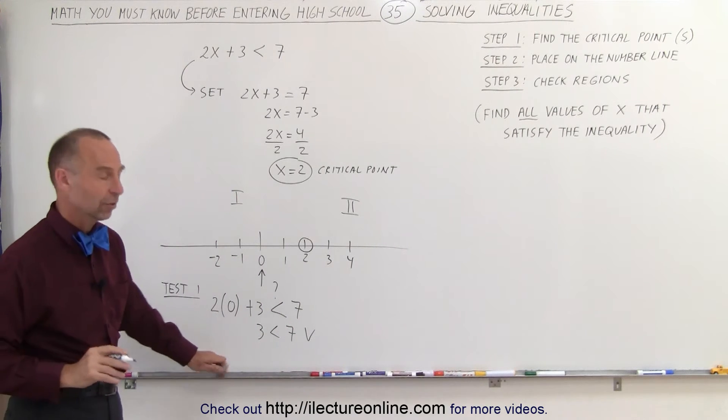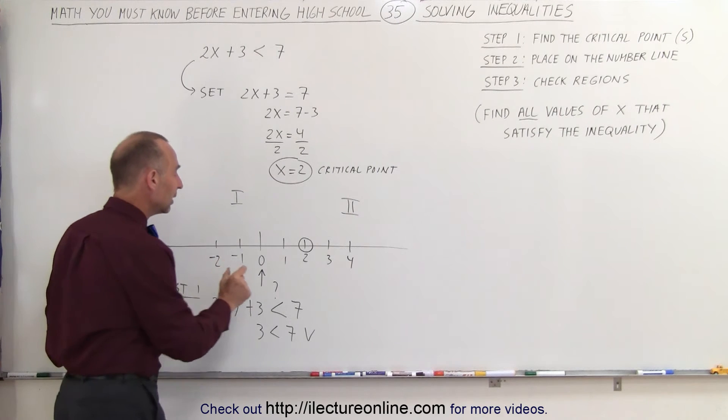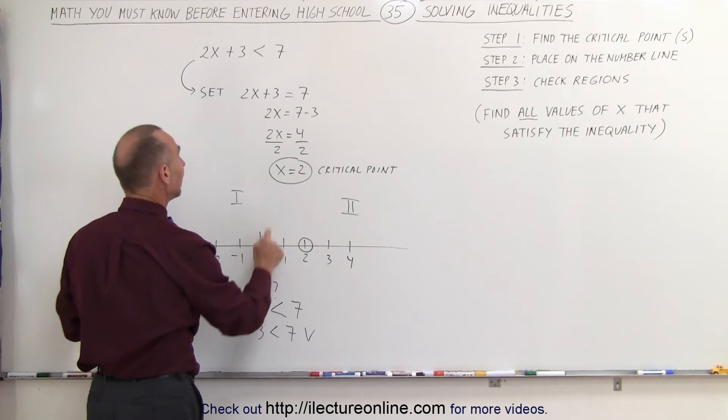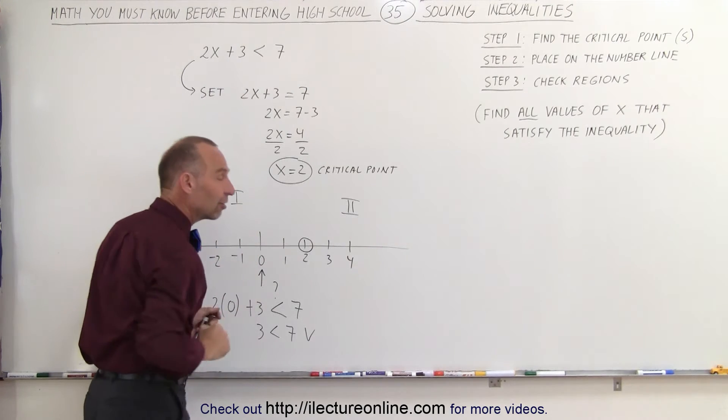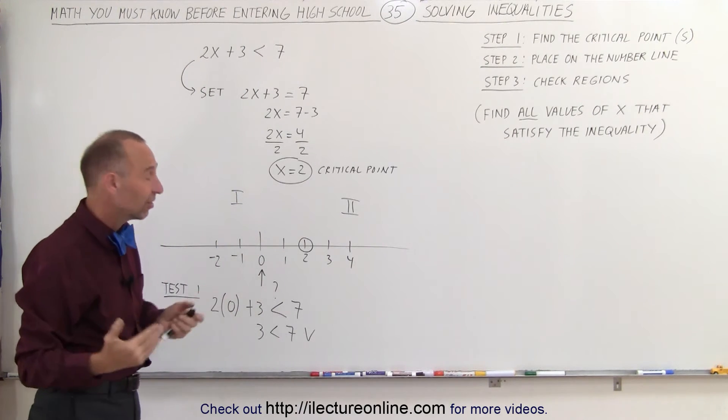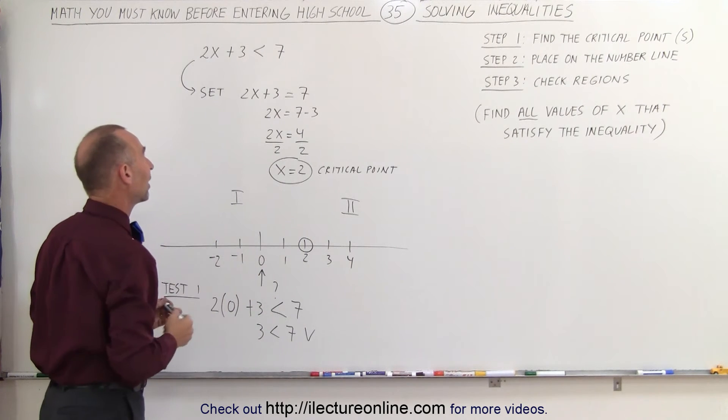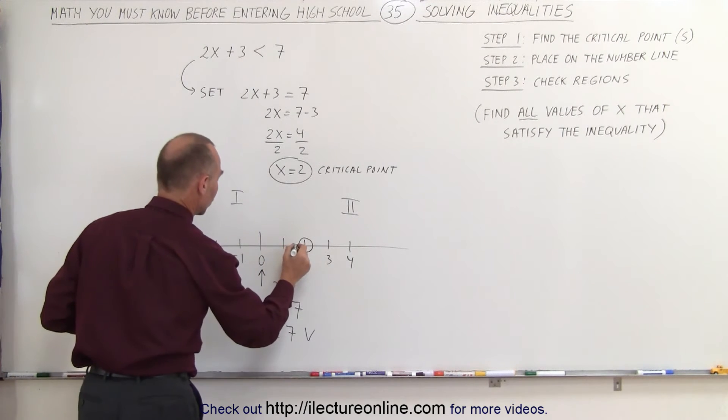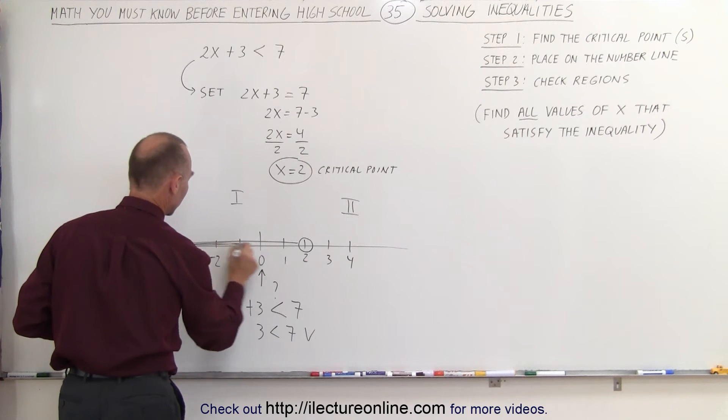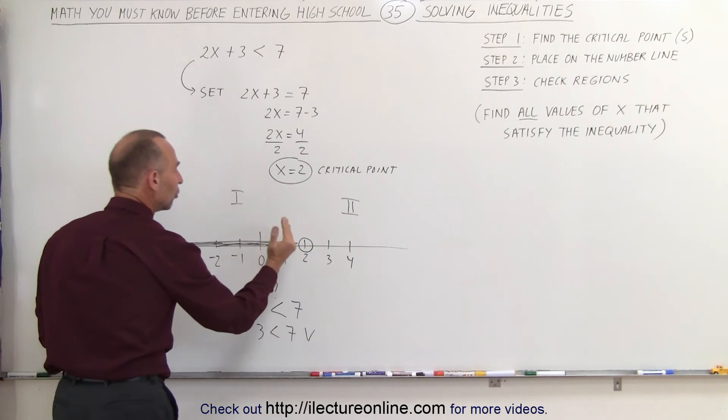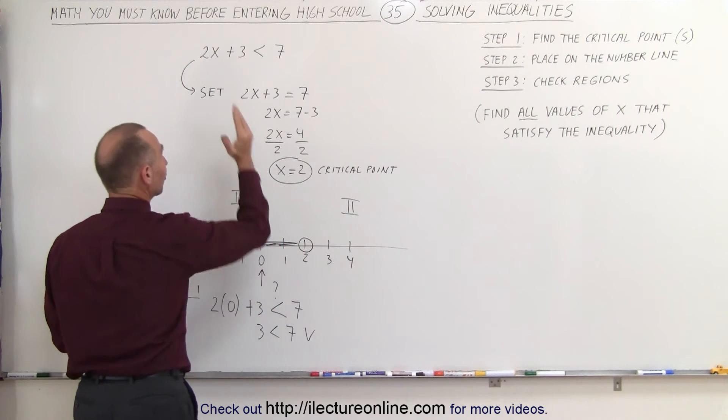That means when I plugged in a number from the left side, region number 1, into our inequality, it satisfied that inequality which then says that all these values to the left of the number 2 satisfy inequality. And so what we're going to do now is we're going to draw a thicker line here with an arrow which indicates that all the values on the number line to the left of the critical point satisfied inequality.